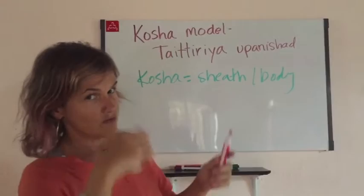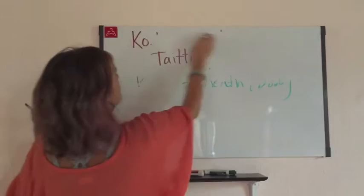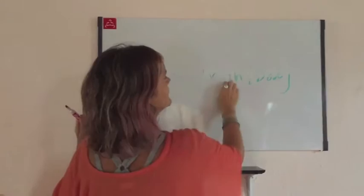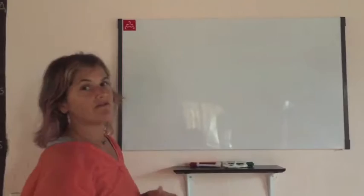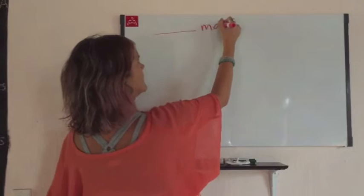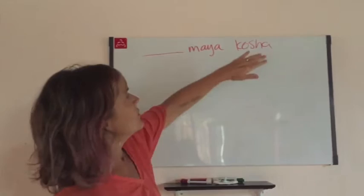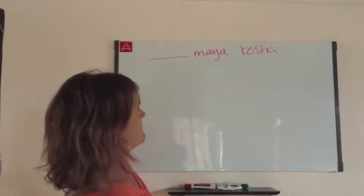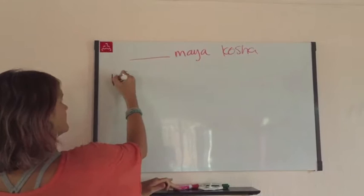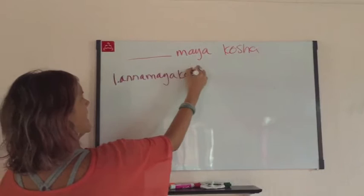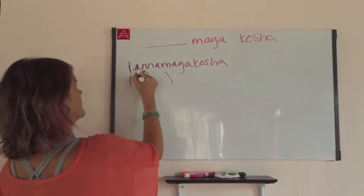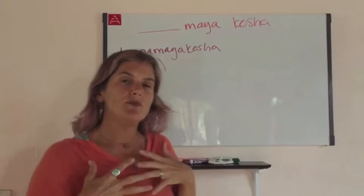We can think of them in a particular order, going from most gross to most subtle. Each one has the word 'maya' in it, so everything is going to be 'something maya kosha.' 'Kosha' means body or sheath, and 'maya' means something like 'made of,' so each level is a body made of something. There are said to be five of these. The first one is Anamaya Kosha — 'ana' means something like food, so the physical body is quite literally the body made of food.